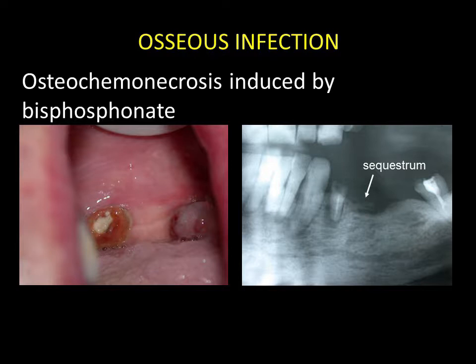Swellings may result from osseous necrosis, in particular osteochemonecrosis, which is currently caused by antiresorptive agents — bisphosphonates and anti-RANK ligand antibodies used in cancer treatment. An osseous sequestrum is generally complicated by a super-infection, which causes mucosal swelling.